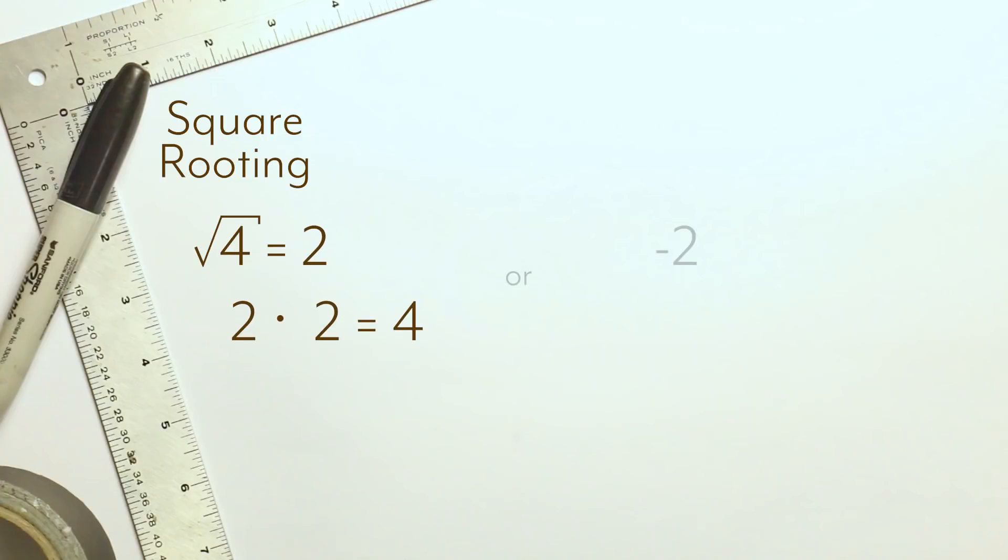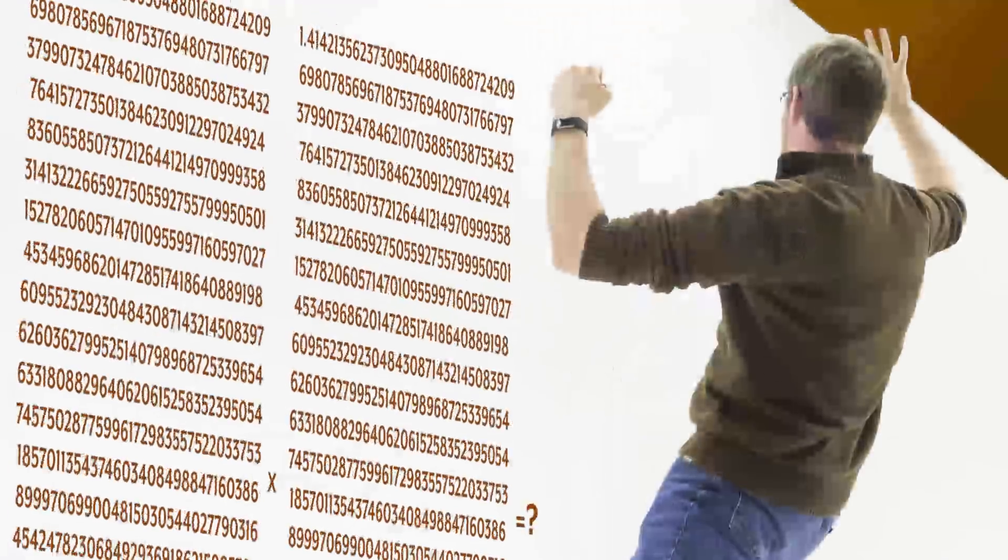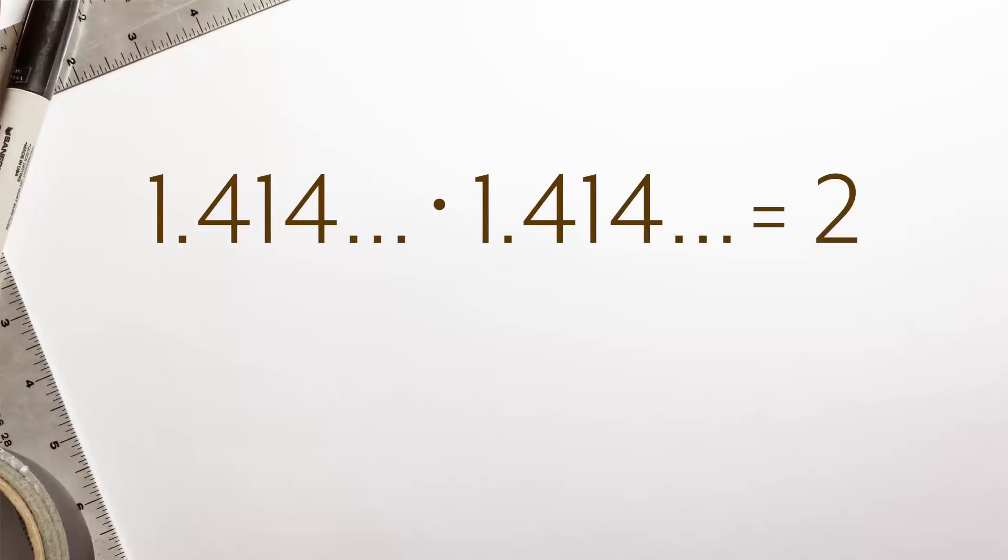The other answer is negative two, but for right now I want to focus on the principal or positive square root. Not every integer has a square root that's also a nice and neat integer. If you look at the square root of two, it's the decimal from last episode. But if you multiply this long decimal by itself, however hard that may be for a person to actually do, you really do get two. Pretty cool.